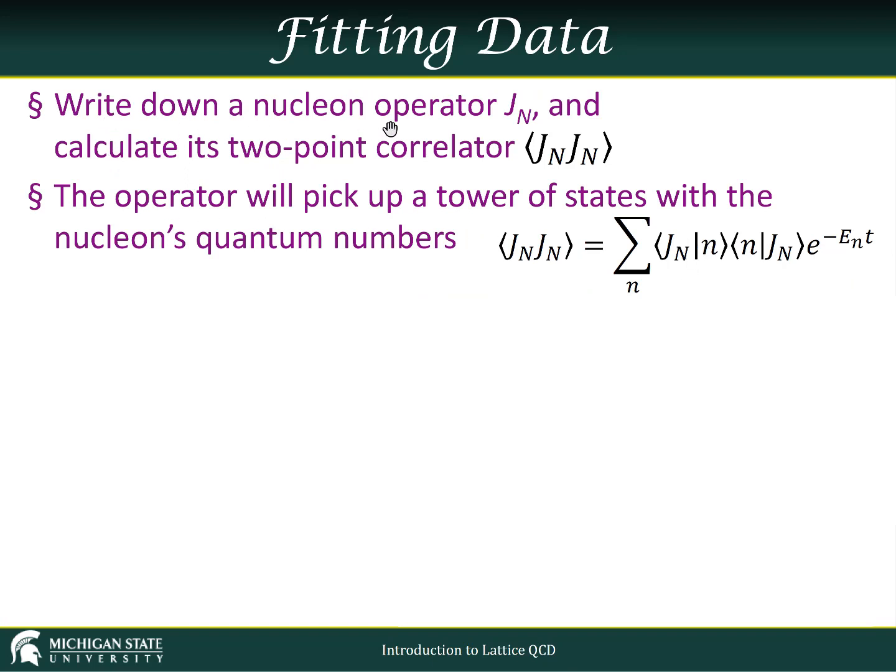If we just write down a nucleon operator, we'll call it J sub n for nucleon, we calculate its two-point correlator, this expectation value over Jn. It's earlier time, some later time. Notice we're talking about actual space-time time, not Monte Carlo time anymore.